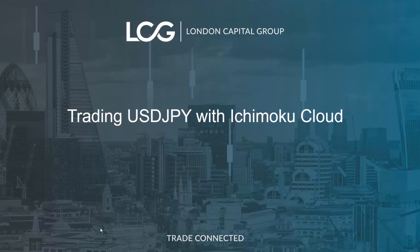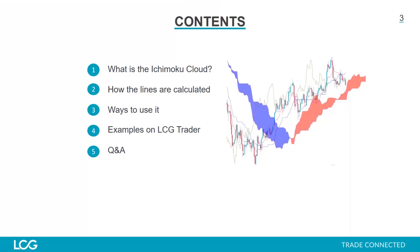I've chosen dollar yen because the Ichimoku cloud originates from Japan and it's one of the top three indicators used by Japanese traders specifically. All the yen pairs tend as a general rule of thumb to work better with Ichimoku than other markets, but the principles you learn here can be used with other Forex pairs, indices, individual shares, and any other asset class.